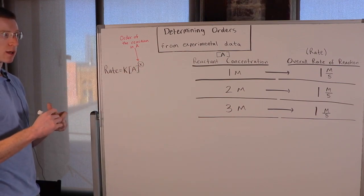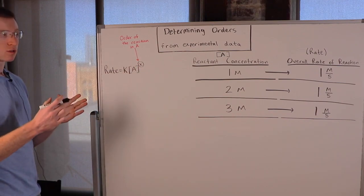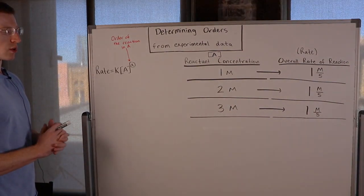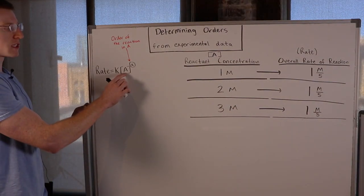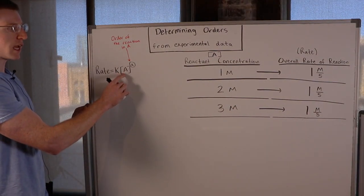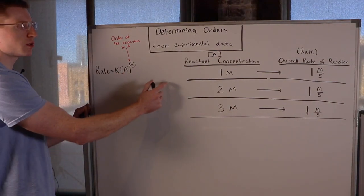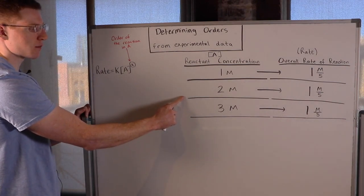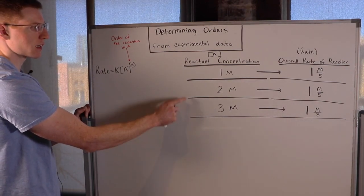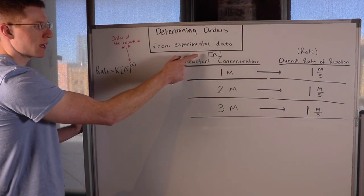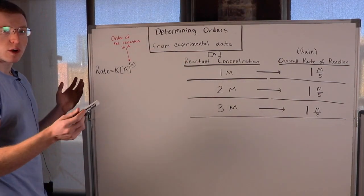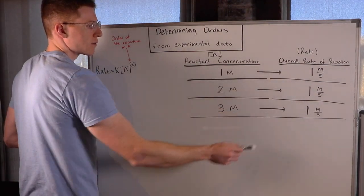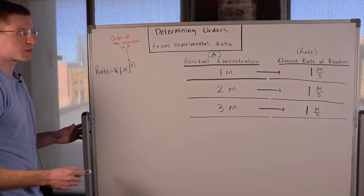To find the order of a given reactant — in this case A — what you do is change the concentration of that reactant and see what effect that has on the overall rate of the reaction.